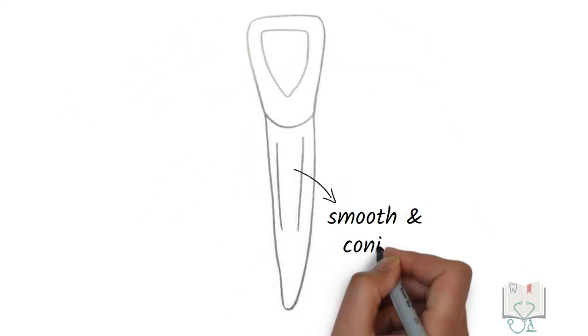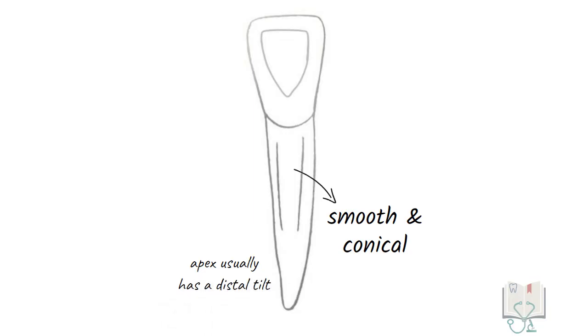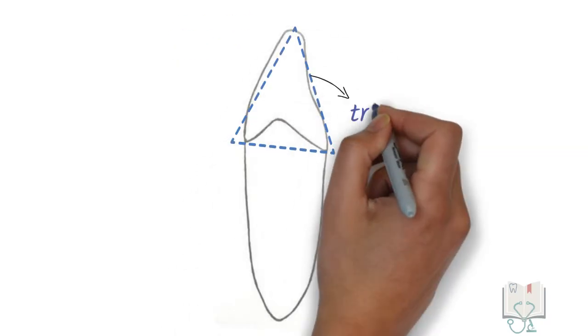The root is smooth, conical and tapering, and the apex has a distal tilt. Next, the mesial aspect. The outline form of the crown is triangular in shape.